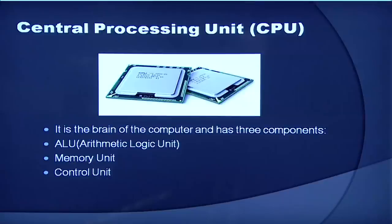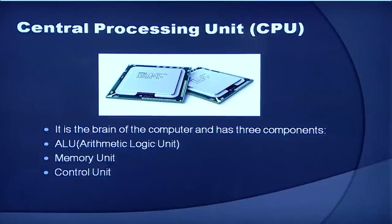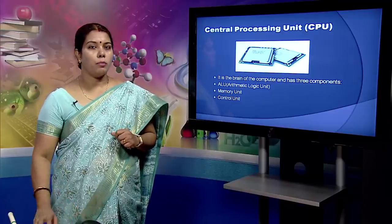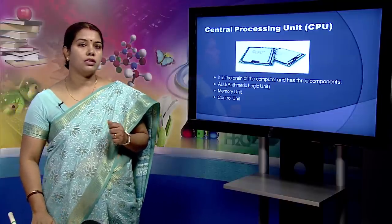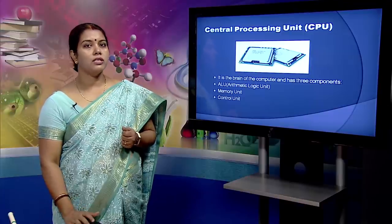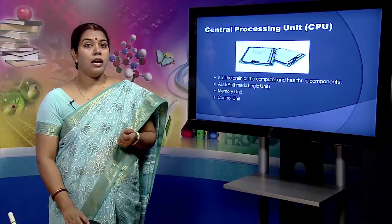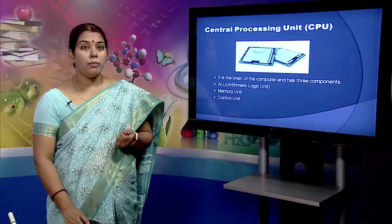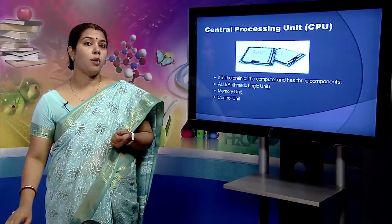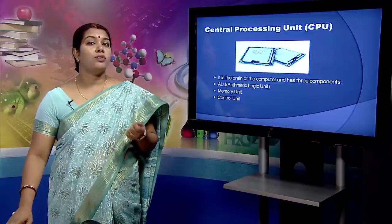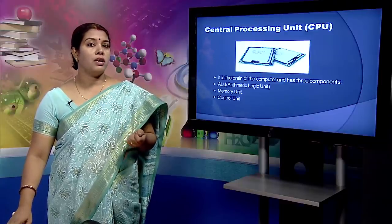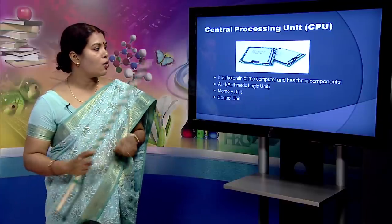The memory unit is basically the RAM part of the CPU. Whatever processing the computer has to do will be temporarily stored in the memory unit. The control unit controls the operations of all parts of the computer but does not carry out any actual data processing operations. It is responsible for controlling the transfer of data and instructions among other units. It manages and coordinates all the units, obtains instructions from memory, interprets them and directs the operation of the computer. It communicates with I/O devices for transfer of data or results from storage, but does not process or store data itself.